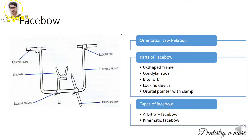Moving on to face bow — a very easy topic. Frame the answer under these headings: orientation jaw relation, which is the orientation of the maxilla with respect to the terminal hinge axis; parts of the face bow; and types of the face bow. Arbitrary face bow can be earpiece type or fascia type, and kinematic face bow is the other type. In kinematic face bow, the bite fork is attached to the mandibular occlusal rim. Always draw a diagram wherever possible, as it will fetch you more marks.